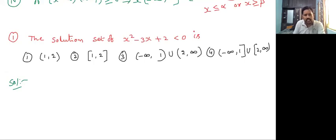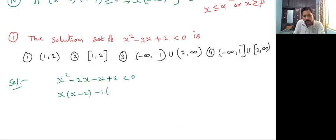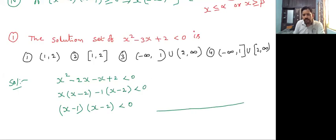X squared minus 3x plus 2 — this is a quadratic equation, split into factors: x squared minus 2x minus x plus 2 less than zero. Take x common from first two terms: x(x minus 2), minus one common: minus one(x minus 2) less than zero. So (x minus 1)(x minus 2) less than zero. Draw the number line. X minus 1 equals zero means x equals one.